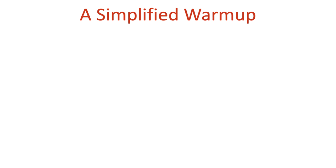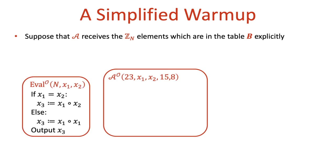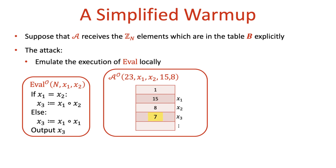To gain some intuition, let's start with a very simplified warm-up. Consider what happens when the attacker gets not only oracle access to the table b of Z_n elements, but also the Z_n elements themselves explicitly. The attack in this case is simply to emulate locally the execution of eval. Knowing the explicit Z_n values of x_1 and x_2 allows the attacker to hold a local copy of the table b, update it according to the code of eval, and finally compute the Z_n value corresponding to the output without any oracle queries.